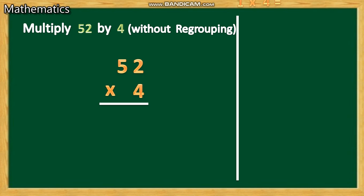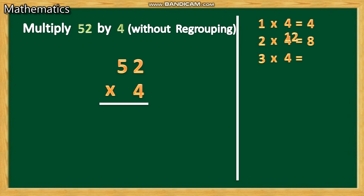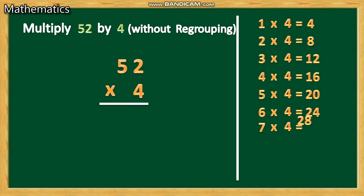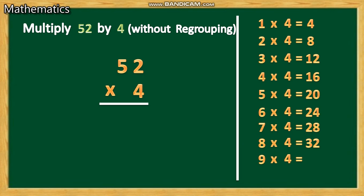1 four is 4, 2 fours are 8, 3 fours are 12, 4 fours are 16, 5 fours are 20, 6 fours are 24, 7 fours are 28, 8 fours are 32, 9 fours are 36, 10 fours are 40. Study this table.